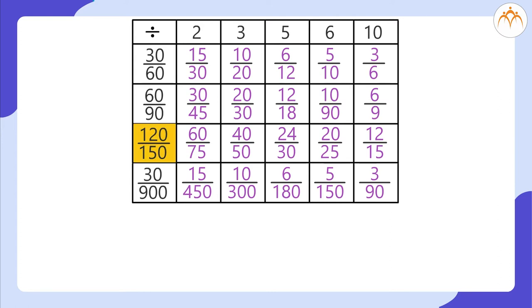120 divided by 150, dividing by 2, gives 60 divided by 75. 120 divided by 150, dividing by 3, gives 40 divided by 50.